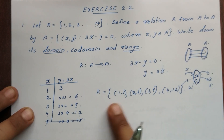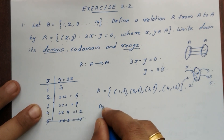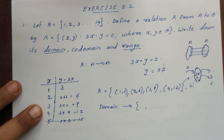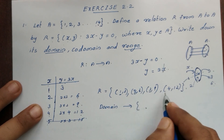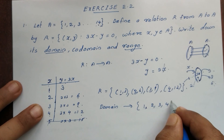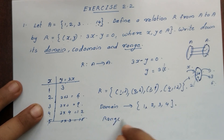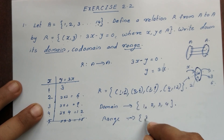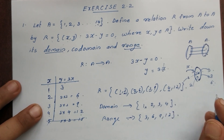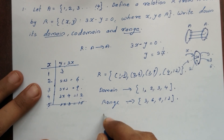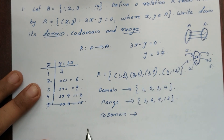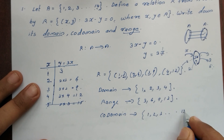Now, the domain is the set of first elements of the ordered pairs: {1, 2, 3, 4}. The range is the set of second elements (output values): {3, 6, 9, 12}. The co-domain is the full second set, which is A = {1, 2, 3, ... up to 14}.